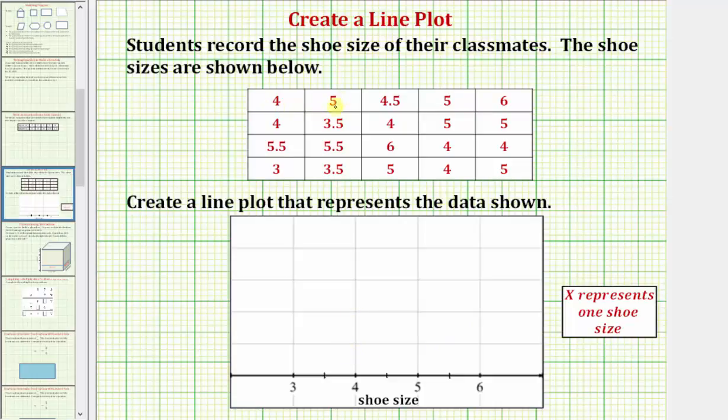Notice how the first two shoe sizes are four and then five, so we place an x above the shoe size of four, as well as an x above the shoe size of five. Now the next shoe size is four point five, which we can also read as four and five tenths, or four and a half. So here we need to recognize that four and a half, or four point five, would be halfway between four and five. So for the shoe size of four point five, we place an x here.